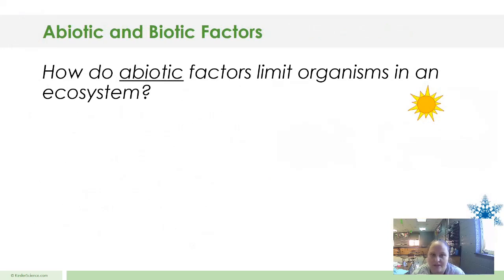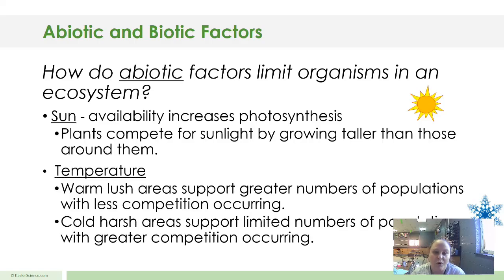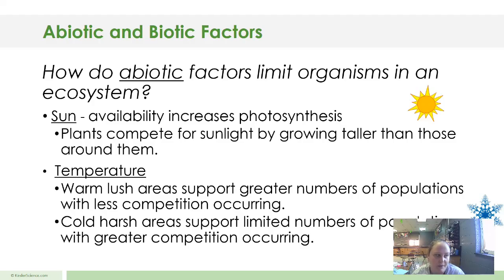Abiotic factors that limit organisms in the ecosystem: the sun — the stronger the direct sunlight we have, the more photosynthesis is going to happen in our plants. Plants compete for sunlight by growing taller than those around them. Temperature: warm, lush areas support greater numbers of population with less competition occurring — warmer places have a lot of populations because it's easier to survive. Cold, harsh areas support limited numbers of populations with greater competition occurring — not very many live there, so they have to compete more for food.